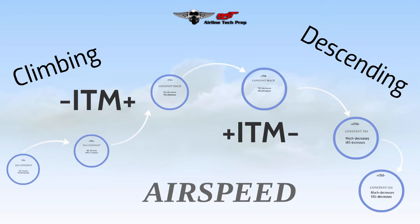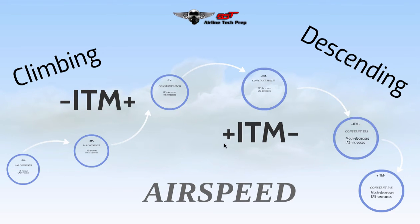On the gouge, you'll notice questions like: what happens to your true airspeed if you hold a constant indicated airspeed in a climb? There's a way to find this out. They use ITM, ECTM, or different formulas, but for this example we're going to use the ITM formula. In a climb you're going from low to high — think of it as negative to positive. ITM stands for Indicated airspeed, True airspeed, and Mach.